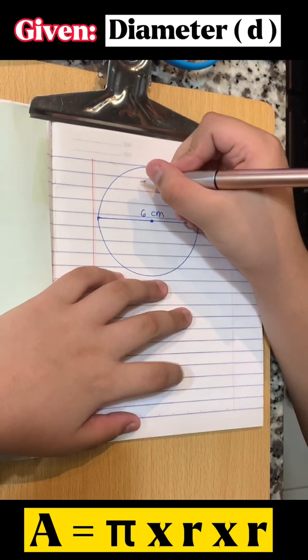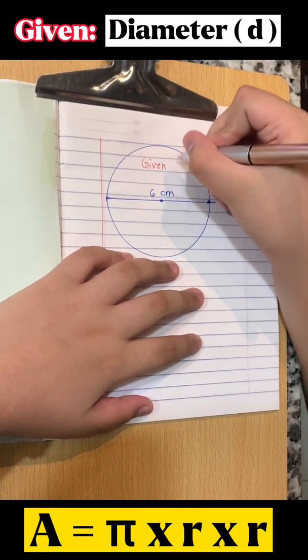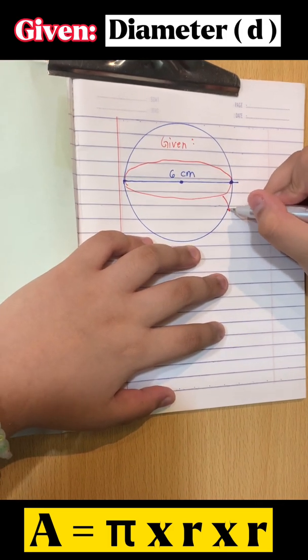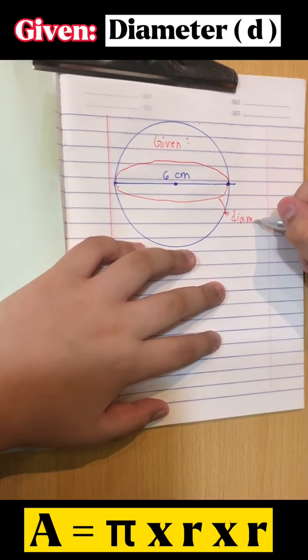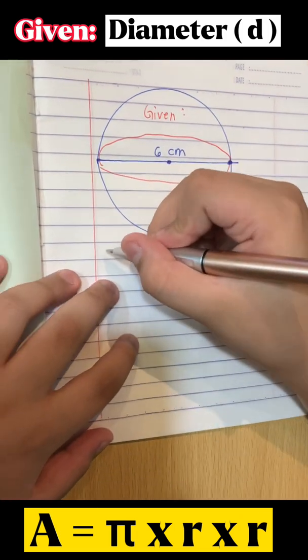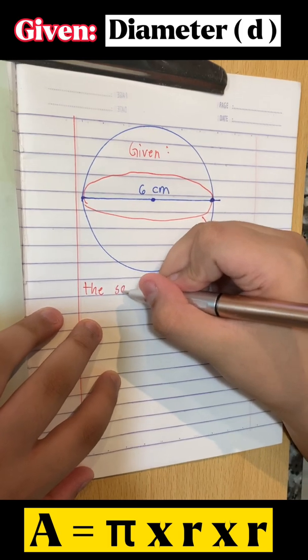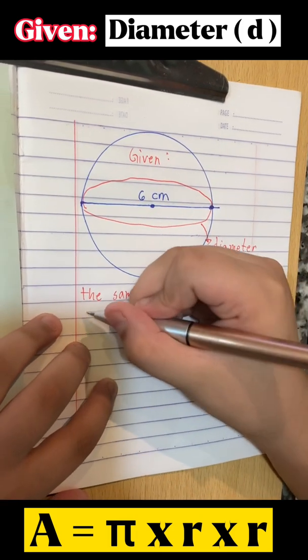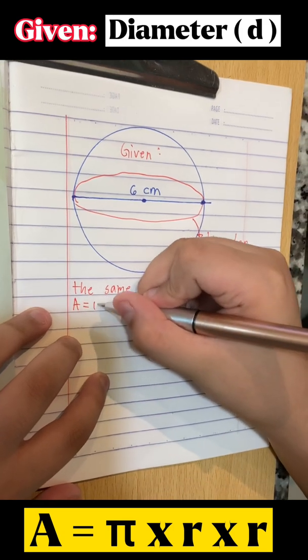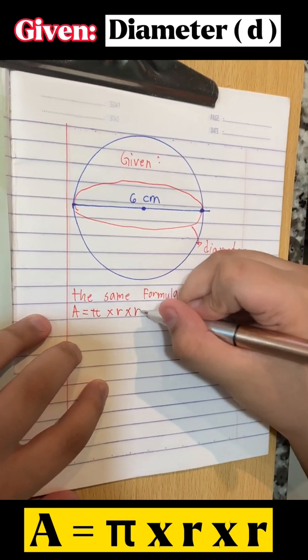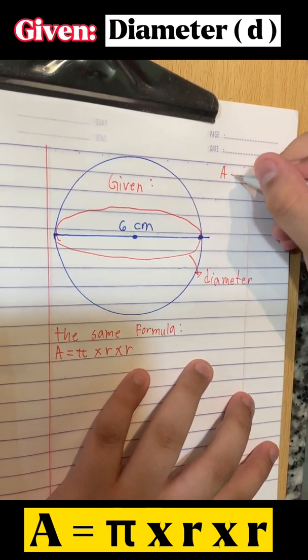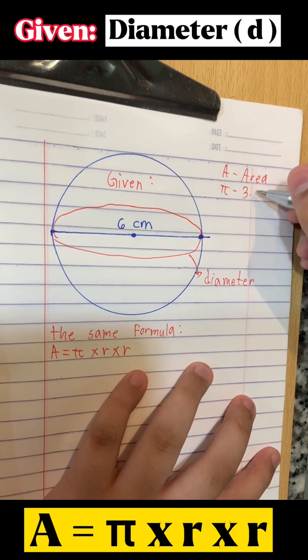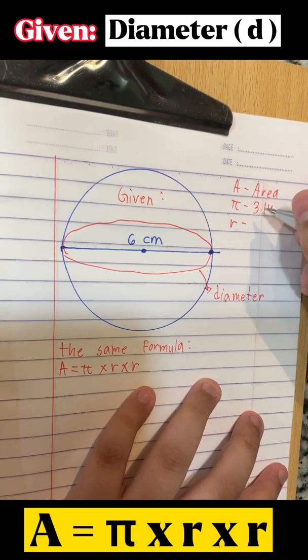If the given is a diameter, use the same formula. A equals pi times R times R. A is area, pi is always 3.14, and R is radius.